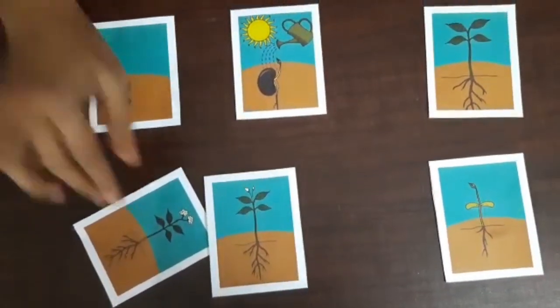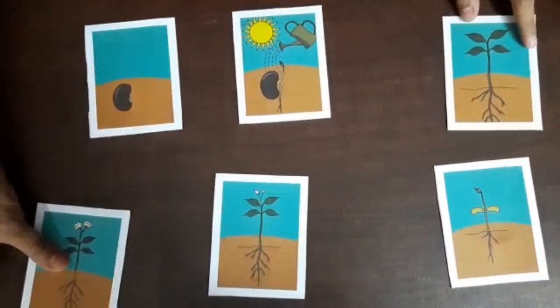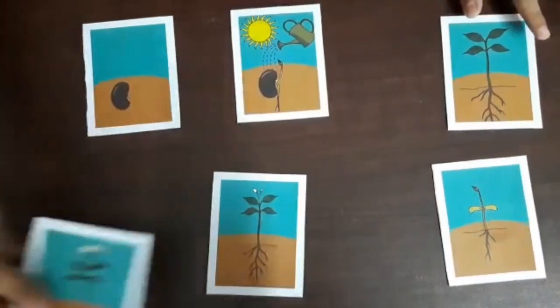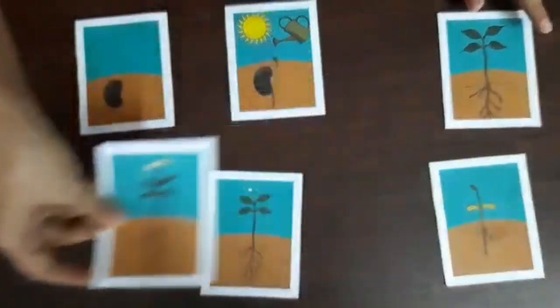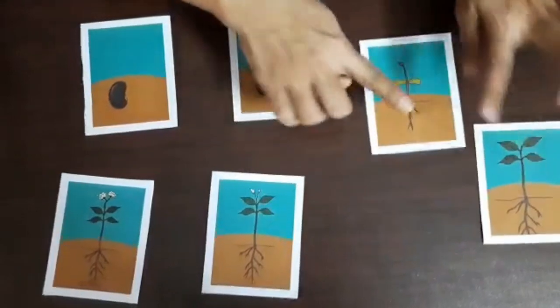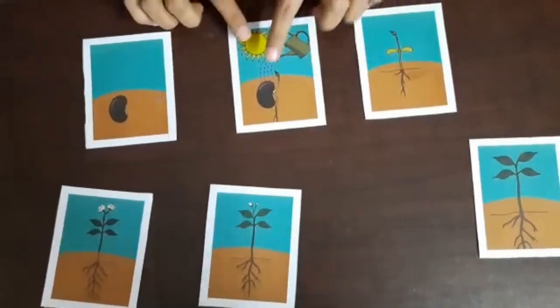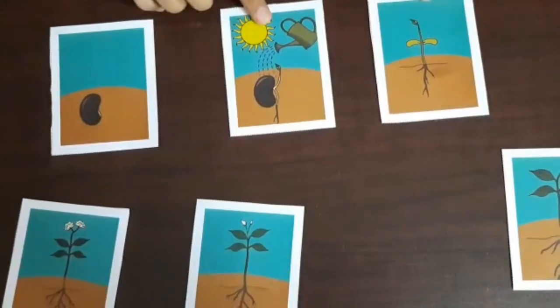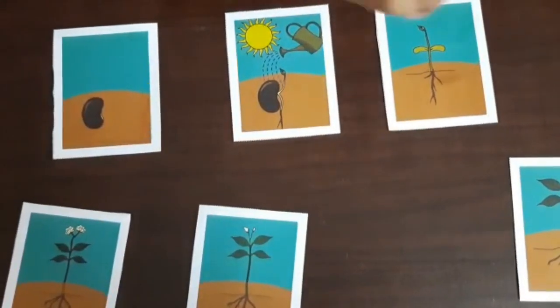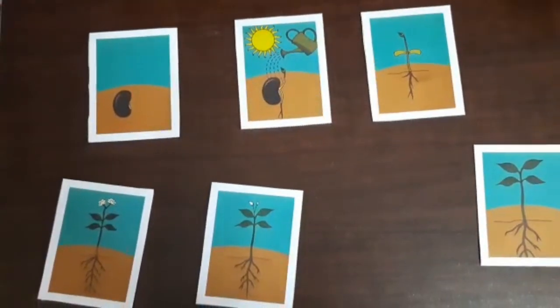Now what is the third one? Third step of the plant is... is it this? No. This? No. Yes, you can see a small sapling has grown out of the seed. This will be the third flashcard, the third stage of a plant.